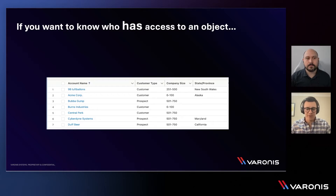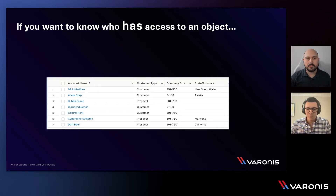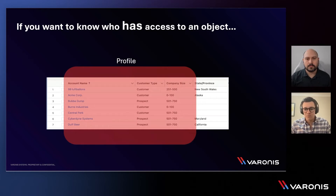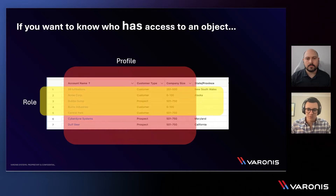When thinking about what a user can actually see when it comes to data within Salesforce, we might start with a table. A profile might give a user certain columns that they have visibility into in that table. Then we can add in the role as well, where we can start to see the individual records — the rows — as illustrated here.